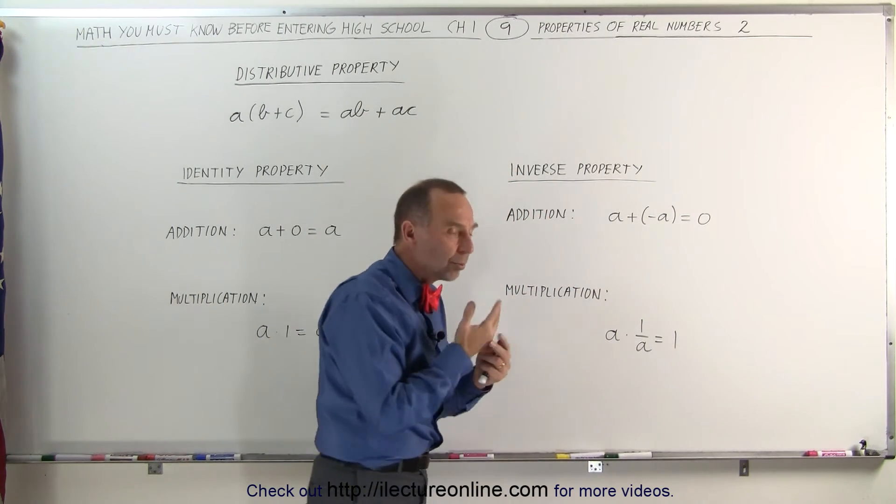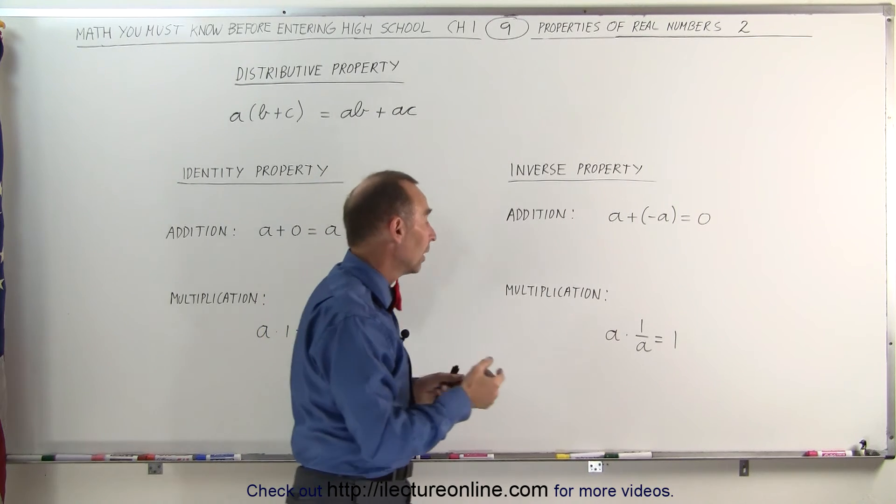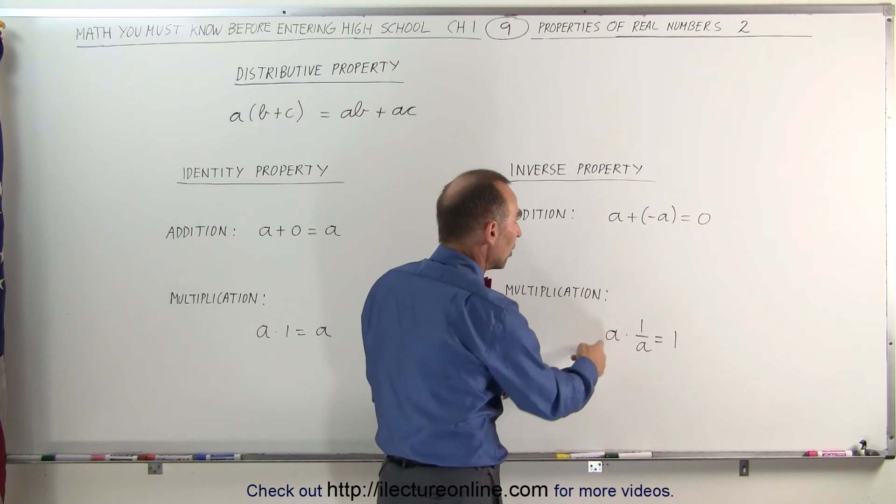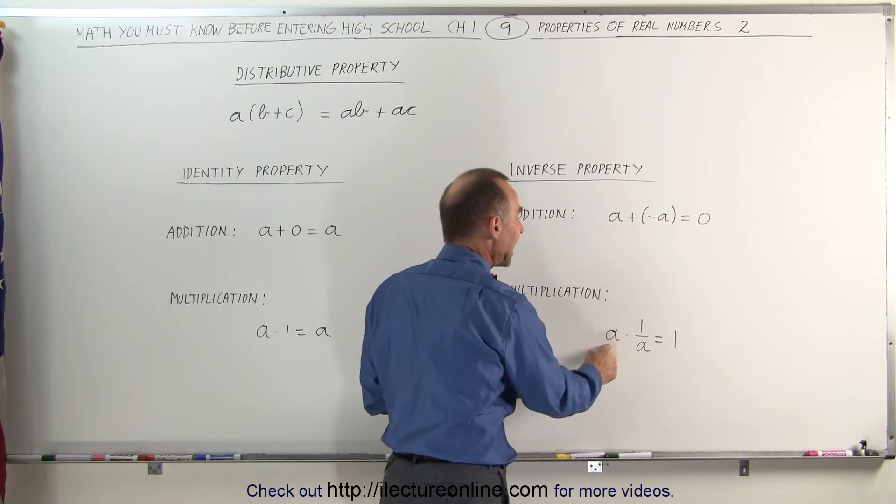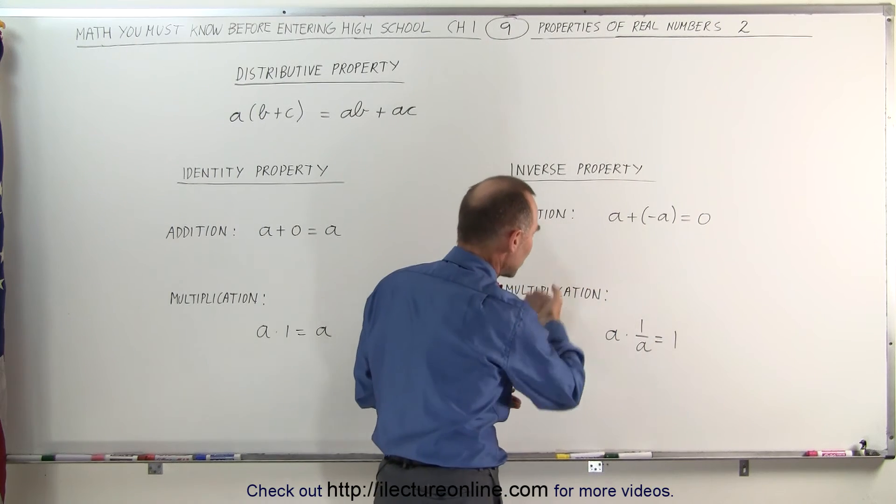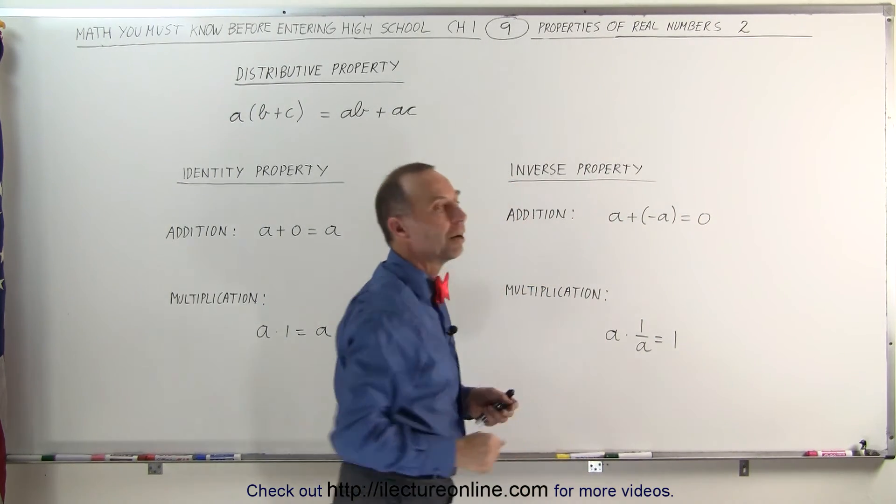With multiplication, what number can we multiply times another number to get 1 back? Well, in this case, we do that with the inverse. We multiply a number by its inverse. A times 1 over A will give you 1. This is considered the inverse property of multiplication, and the previous case is the inverse property of addition.